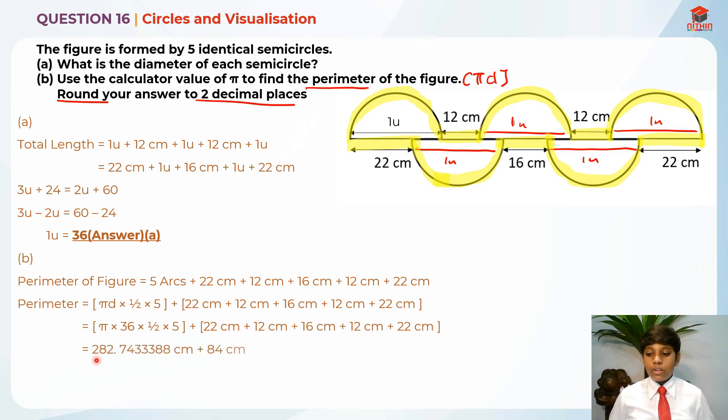After calculating, we get 282.7433388 cm plus 84 cm, which gives us 366.7433388 cm. This is a long number, which is why they ask us to round our answer to two decimal places. After rounding off, you'll get 366.74 cm as the answer for part B.